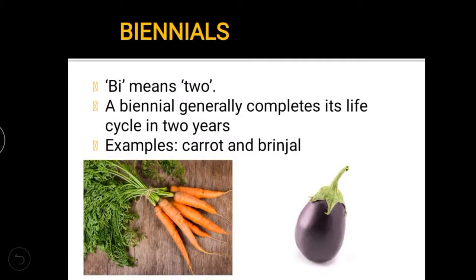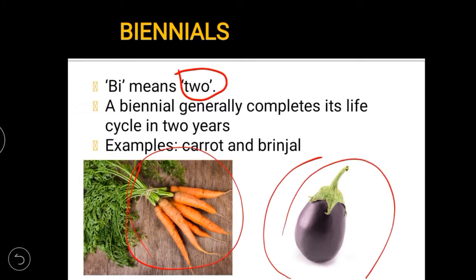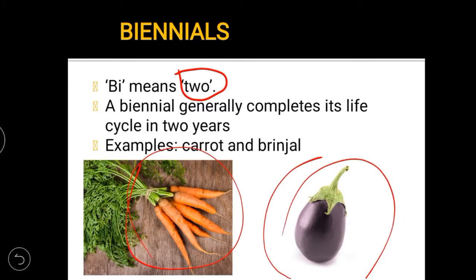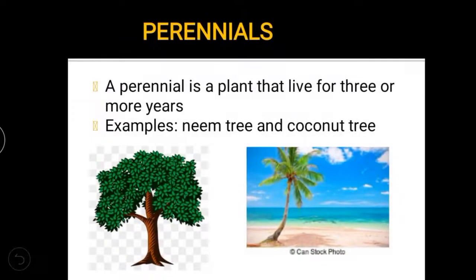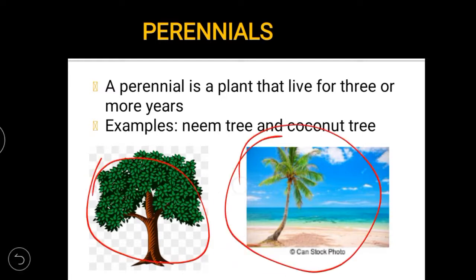Bi means two. A biennial generally completes its life cycle in two years — from germination to the day of death. Examples of biennials: carrot and brinjal. A perennial is a plant that lives for three or more years. All trees can be considered perennials. Examples of perennials: neem tree and coconut tree.